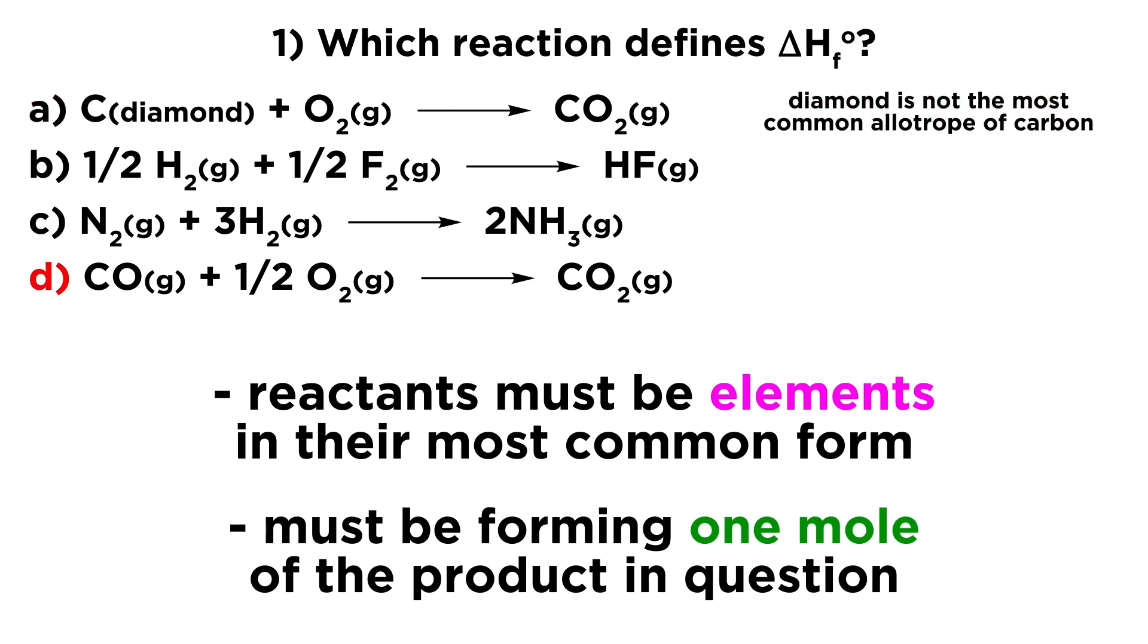Now skipping over to option D, we can very clearly see that we have a compound as a reactant. We have carbon monoxide. That is not an element, so this does not qualify as a standard heat of formation for carbon dioxide. This would have to be something closer to option A, just with charcoal instead of diamond, because we need the elements on the left side.